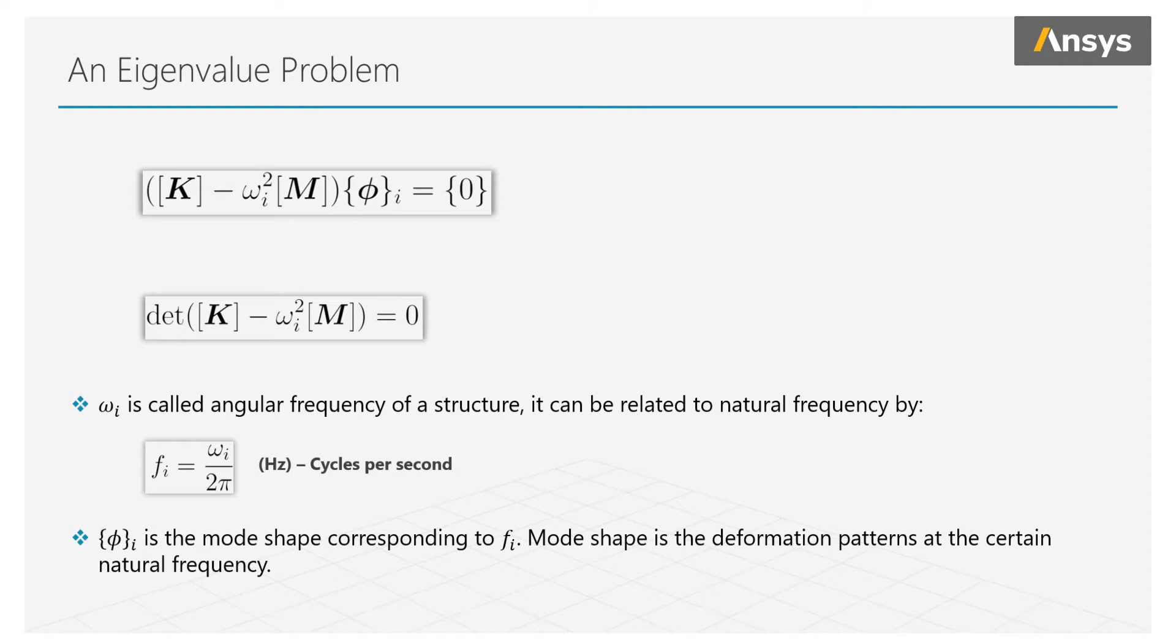It is important to note that omega is the angular frequency, and it is related to the natural frequency by the simple relationship of 2 pi. In the practice of modal analysis, we will typically be interested in and reporting the natural frequency as it has the units of interest of hertz, or cycles per second, rather than the angular frequency, which has units of radians per second.